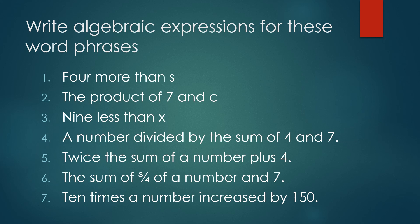The sum of 3 fourth of a number and 7. So 3 fourth of z plus 7. 10 times a number increased by 150. It is 10m plus 150.